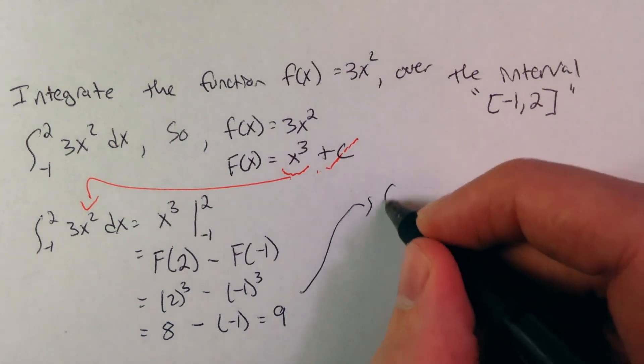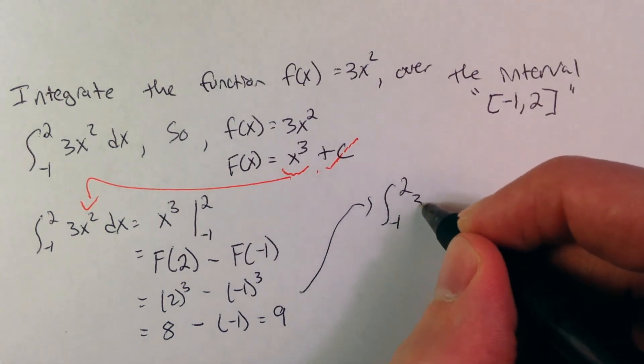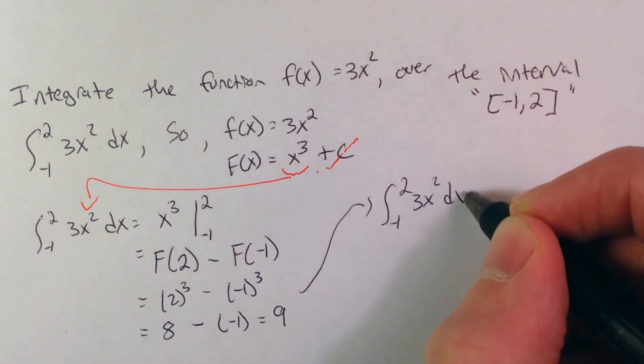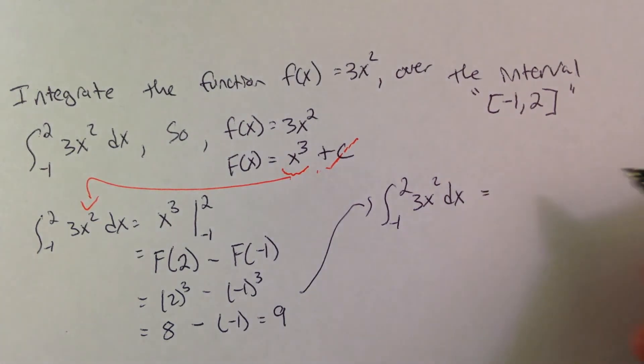So our final answer here, the integral from negative 1 to 2 of 3x squared dx is 9, meaning the area underneath the curve from negative 1 to 2 of 3x squared is equal to 9.